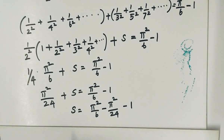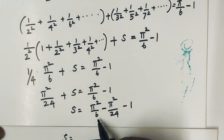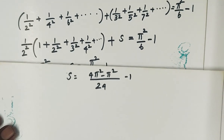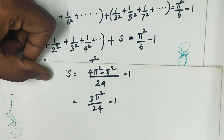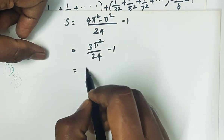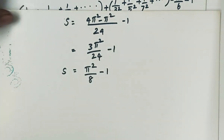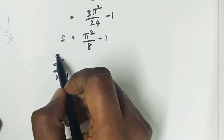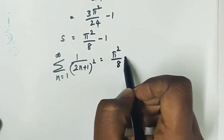Next step: 3 and 24 simplify, so we get pi square by 8 minus 1. So S, which is summation n equal to 1 to infinity, 1 by 2n plus 1 whole square, has value equal to pi square by 8 minus 1.